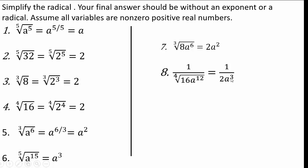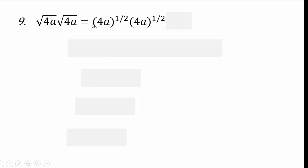Try this: square root of 4a times square root of 4a. We have 4a to the power one half, times 4a to the power one half — same base 4a both raised to a power, so we add one half plus one half, which gives 4a to the power 1, which is 4a.